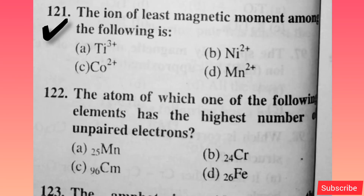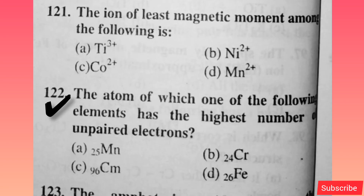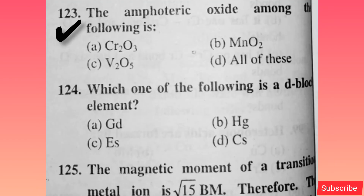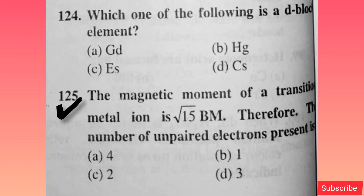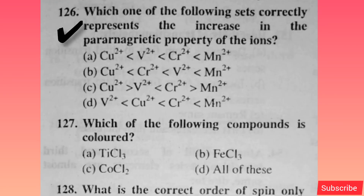The ion of least magnetic moment among the following is — option A is correct. The atom of which one of the following elements has the highest number of unpaired electrons? Option A is correct. The amphoteric oxide among the following is — option A is correct. Which one of the following is a d-block element? Option B is correct. The magnetic moment of a transition metal ion is √15 BM; therefore the number of unpaired electrons present is — option D is correct. Which set correctly represents the increase in paramagnetic property of the ions? Option A is correct.